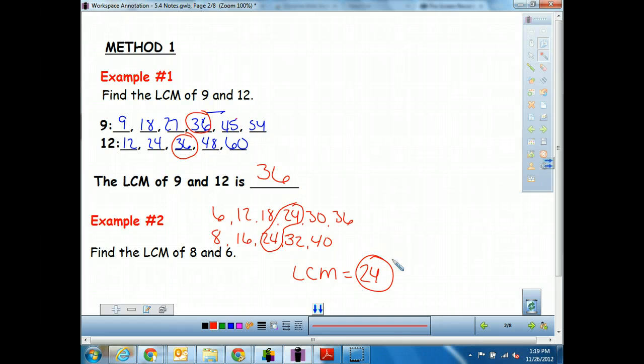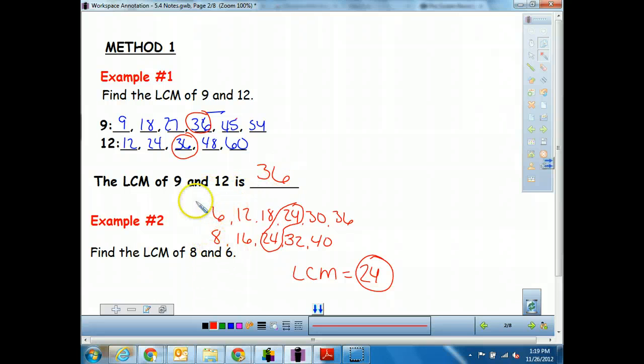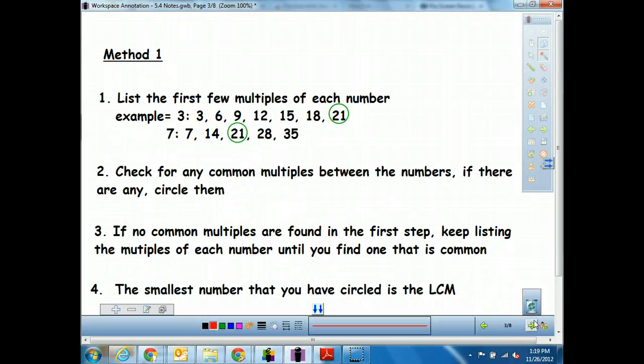Now, this works really well when we have small numbers or easy numbers to work with. 8 and 6 are pretty easy. 9 and 12 are pretty easy. But sometimes we have bigger numbers. Let me back up here. Here's just our written out of how we do method 1. List the first few multiples of each number. Check for any common ones, if there are, circle them. If no common multiples are found in the first step, then keep listing a little bit further. Sometimes you need to list a little bit further, and you'll find ones that are common. The smallest number that you have circled is the LCM. So with that, let's go ahead and move on to the next slide.